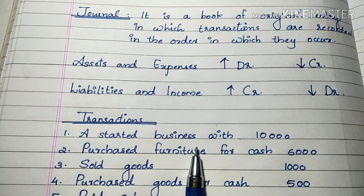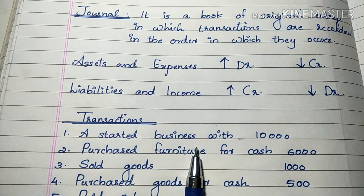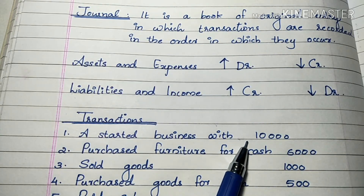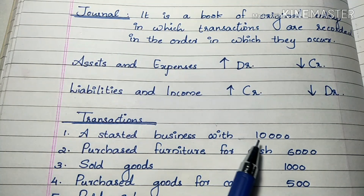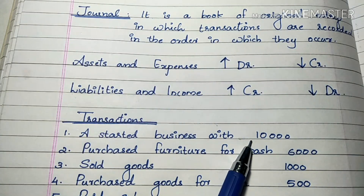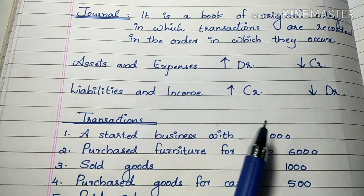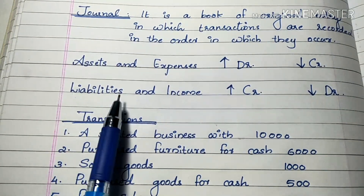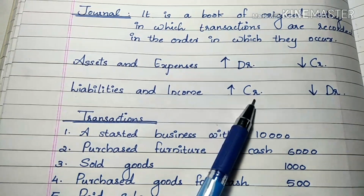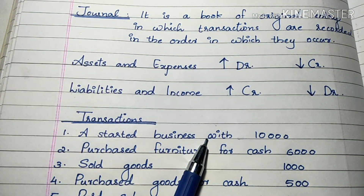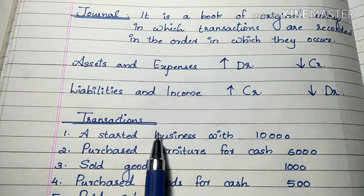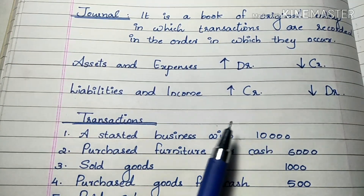What is this business called? It is called capital. So we have a capital account. We also have cash coming in. So the two accounts are: capital account and cash account. Capital is a liability, so capital goes to credit. Cash is an asset, so cash goes to debit. Cash account debit, capital account credit.